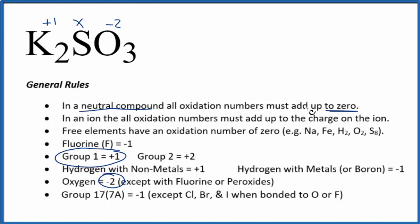All of this has to add up to zero because it's a neutral compound. So we can just make an equation. We could say two times the positive one plus, we don't know the sulfur, plus three times minus two, all of that equals zero.